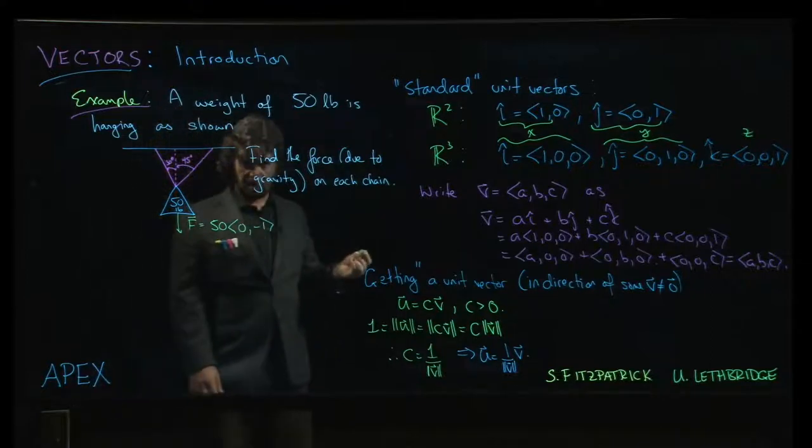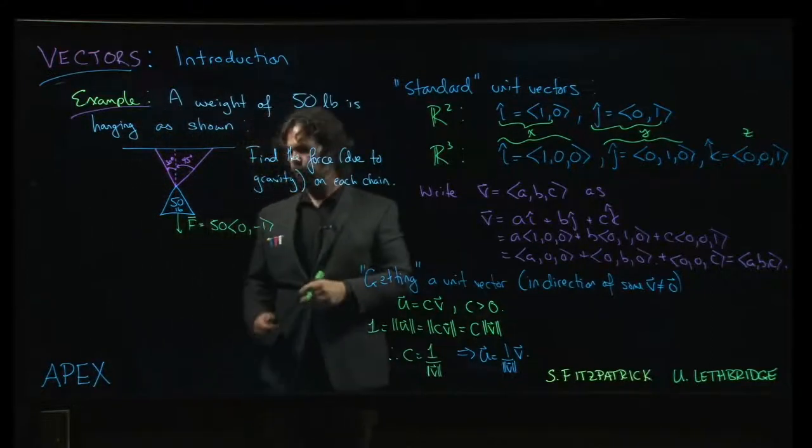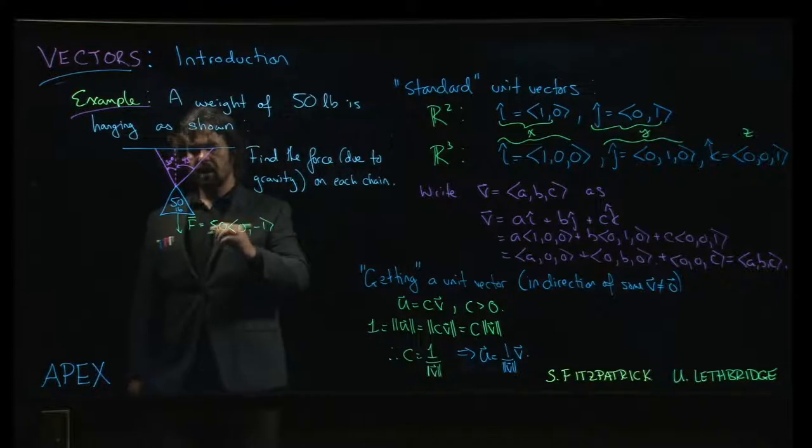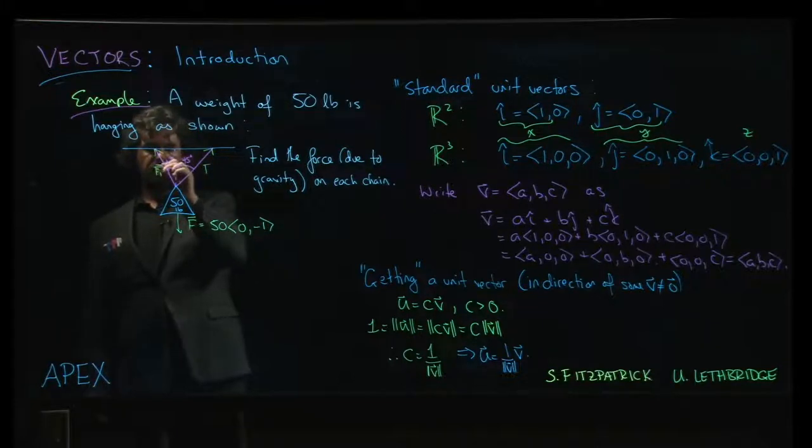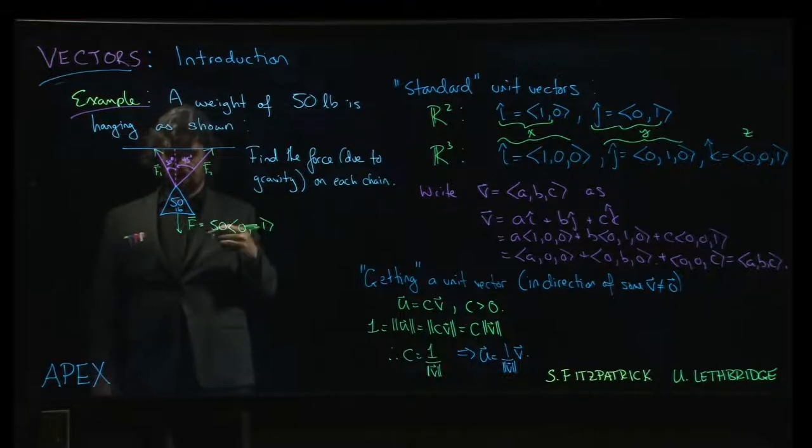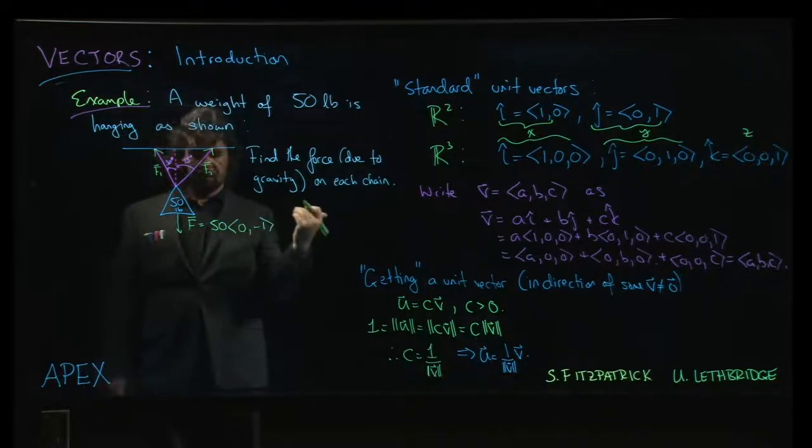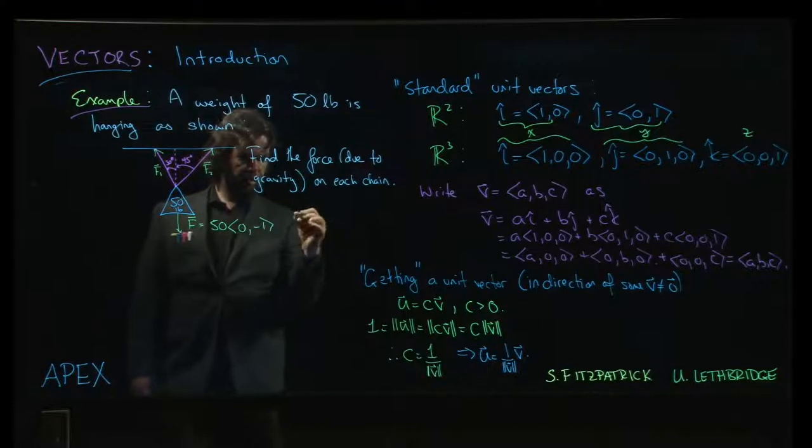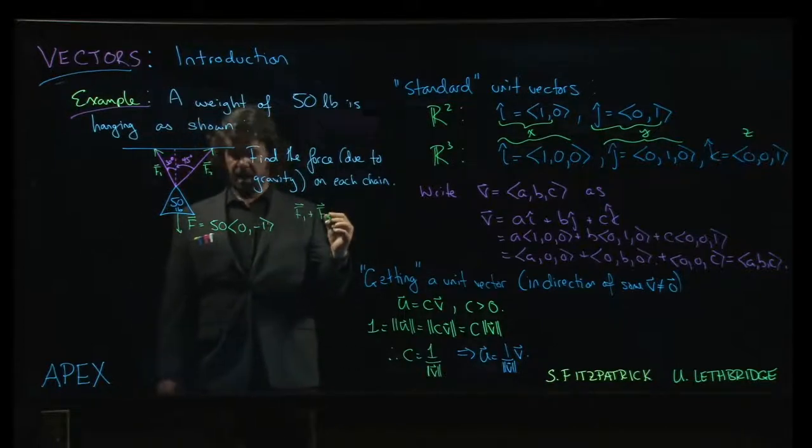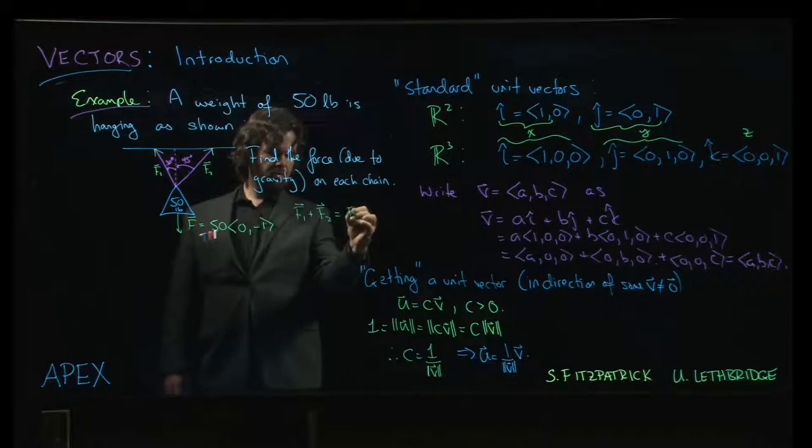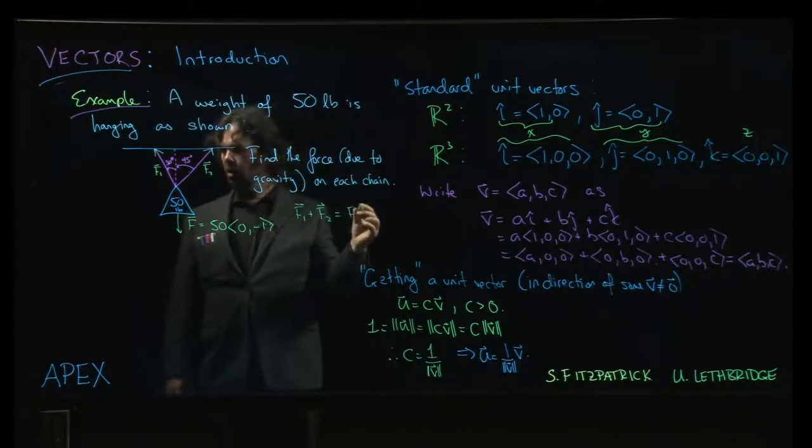So we have two vectors over there, so we can assign that 0, -1, okay? So we have that force pulling down, and so now we have, you know, we can think of kind of two forces, say, F1 and F2 that are pulling back up to counter that force. And nothing is moving here, and so the point is that, well, F1 plus F2, right, those two vectors, when added together, should be equal.